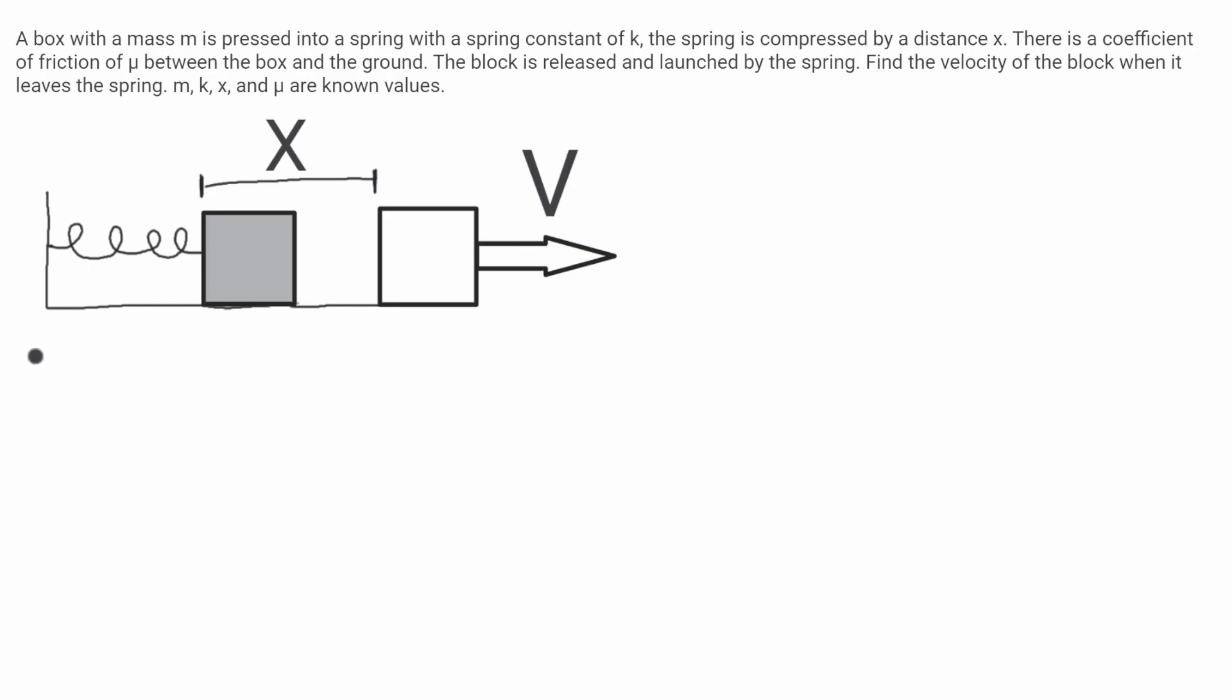I'm going to start by writing my work equation. Work is going to be equal to E2 minus E1, where this work will be work done by friction. We're also neglecting air resistance, so the only non-conservative work will be done by friction.